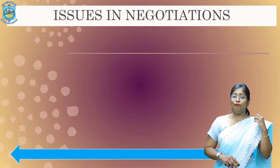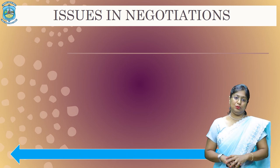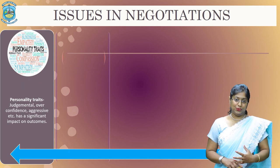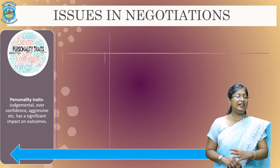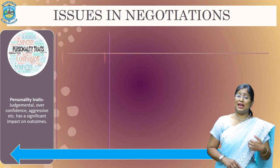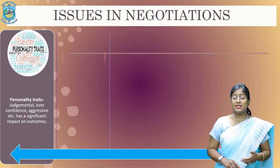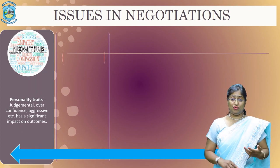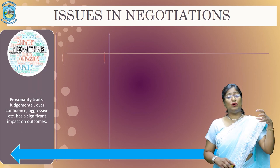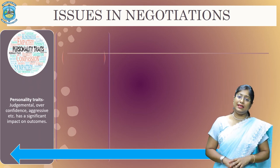Let's come to the last topic for today: issues in negotiation. What are the general problems seen while negotiating? Number one is the personality trait of individuals. The traits of individuals can definitely be a problematic issue — some people can be very judgmental, some can be overly confident, some are going to be very aggressive. In these situations, it is going to give a negative impact on the outcomes.